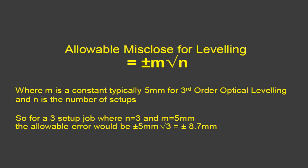Note that in this case, because m is five millimeters, our answer will be in millimeters. So there you have it — the allowable misclose for leveling is plus or minus m times the square root of n, where m is a constant, typically five millimeters for third-order leveling, and n is the number of setups — the number of times you set up the level.